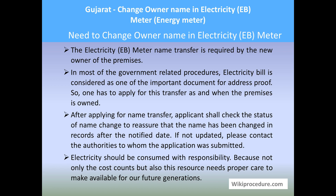The information provided in the electricity bill will be useful for a user to show as residential proof in most government-related procedures. Also, the responsible person for electricity consumption becomes the owner of the premises and the owner of the electricity connection. In addition to all these things, the owner is responsible for future transactions. So as a new owner, it is your responsibility to change the name in the respective electricity board office for the electricity connection with your premises.